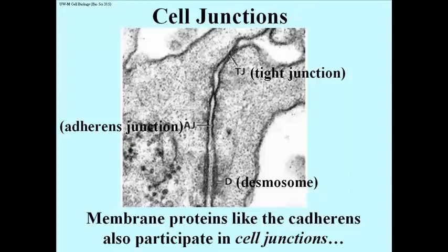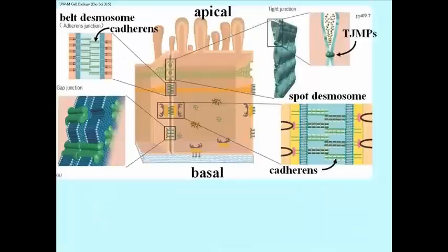Cell junctions. There are tight junctions, adherence junctions, which we'll talk about by another name in a moment, and desmosomes. Membrane proteins participate in these cell junctions, and you'll see in a moment that cadherins play a major role.